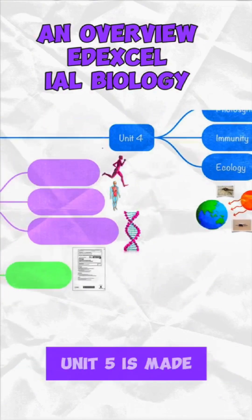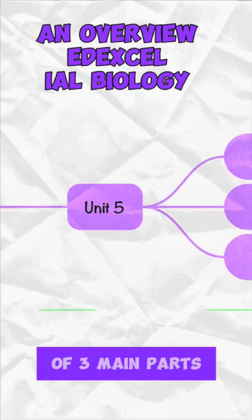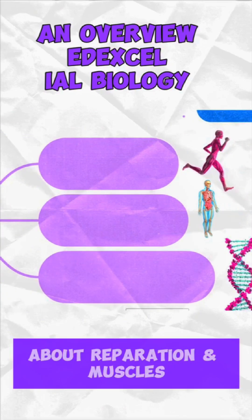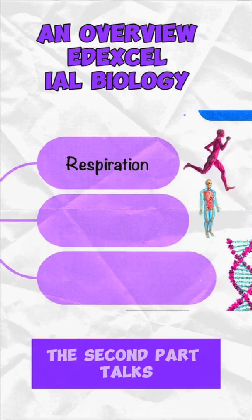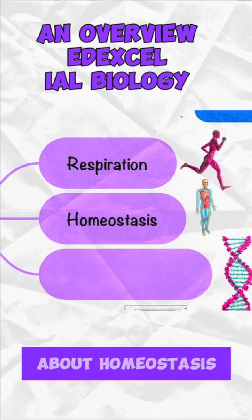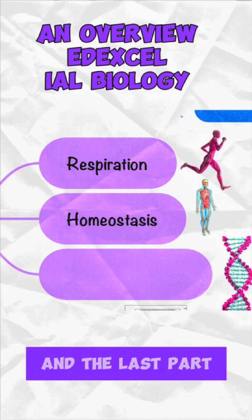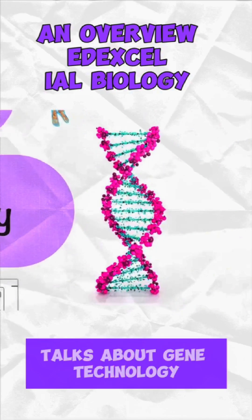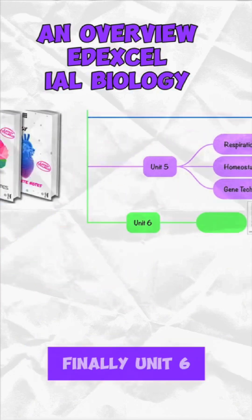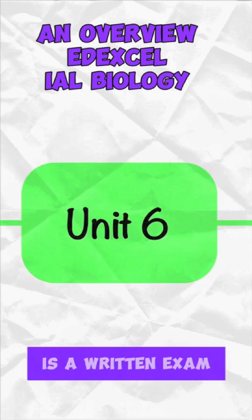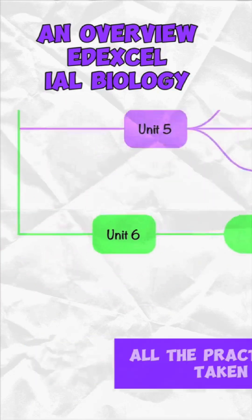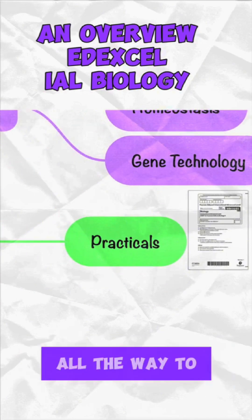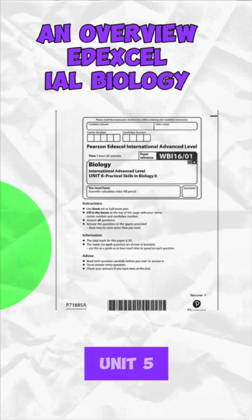Unit 5 is made up of three main parts. The first part talks about respiration and muscles, the second part talks about homeostasis, and the last part talks about gene technology. Finally, Unit 6 is a written exam of all the practicals taken from Unit 1 all the way to Unit 5.